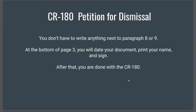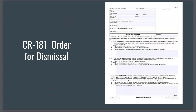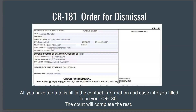You don't have to write anything next to paragraphs 8 or 9. At the bottom of page 3, date your document, print your name, and sign — after that you've completed the CR 180. You can then move on to form number 2, the CR 181, Order for Dismissal. Most of this form gets filled out by the court after your hearing. Even though you do not fill in a lot of information, a copy gets served alongside the CR 180 on the DA and Probation Department before you file your original paperwork with the court. For the CR 181, all you have to do is fill in your contact information and case information that you filled in on the CR 180.